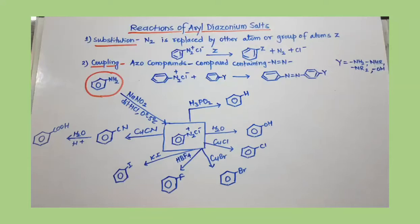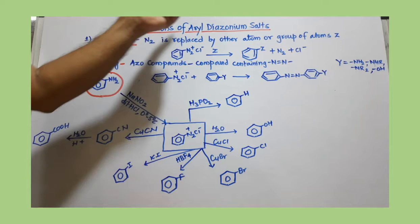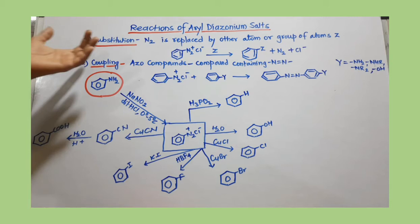We will discuss reactions of aryl diazonium salts. In a previous video, we saw how aryl diazonium salts are produced after diazotization — a primary aromatic amine is converted into aryl diazonium salts. This very important and useful aryl diazonium salt can give two types of reactions: one is substitution.